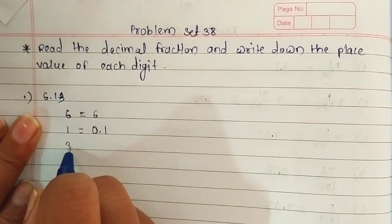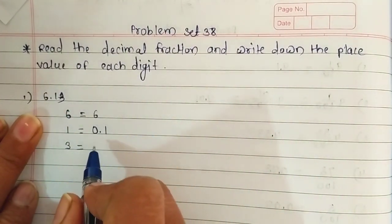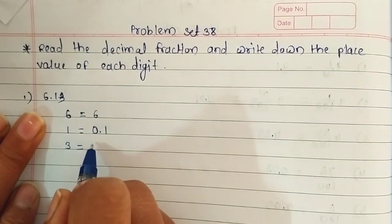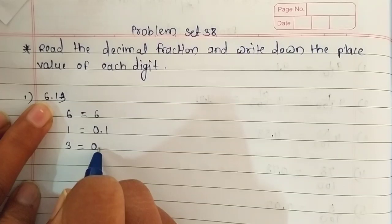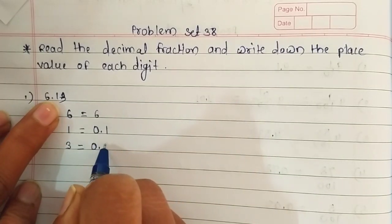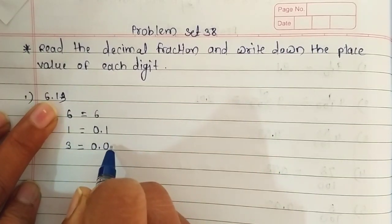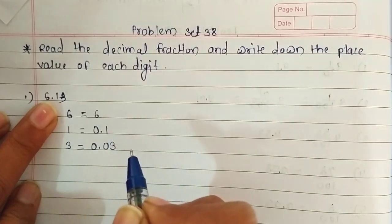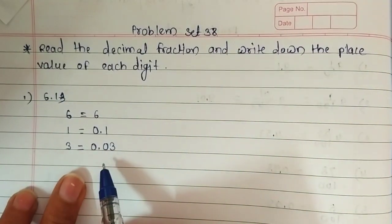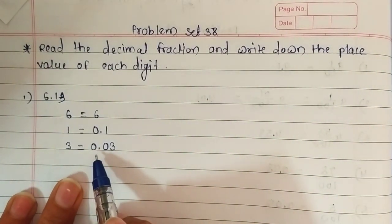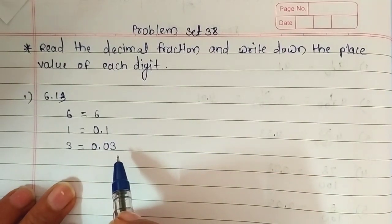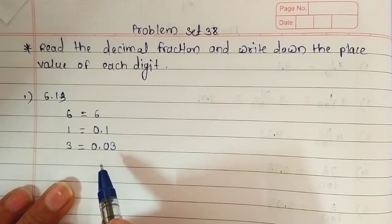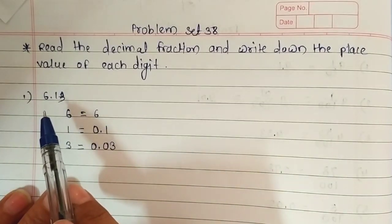Now the next number is 3. We are going to write it as 0 for 6, then decimal point, 0 for 1, and then write 3. Its place value is 0.03. Look, it's very easy — you just have to write 0s for each and every digit, but do not forget to place a decimal point.